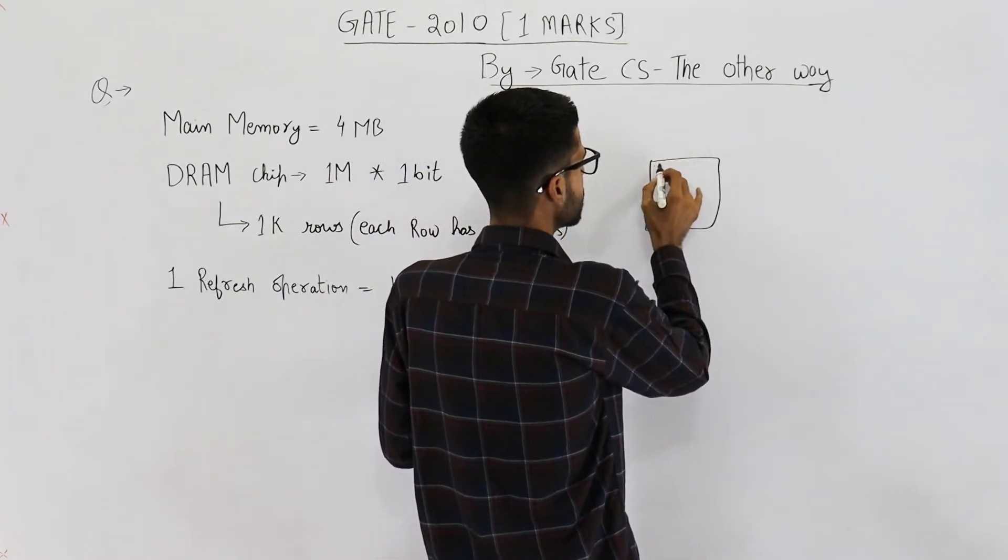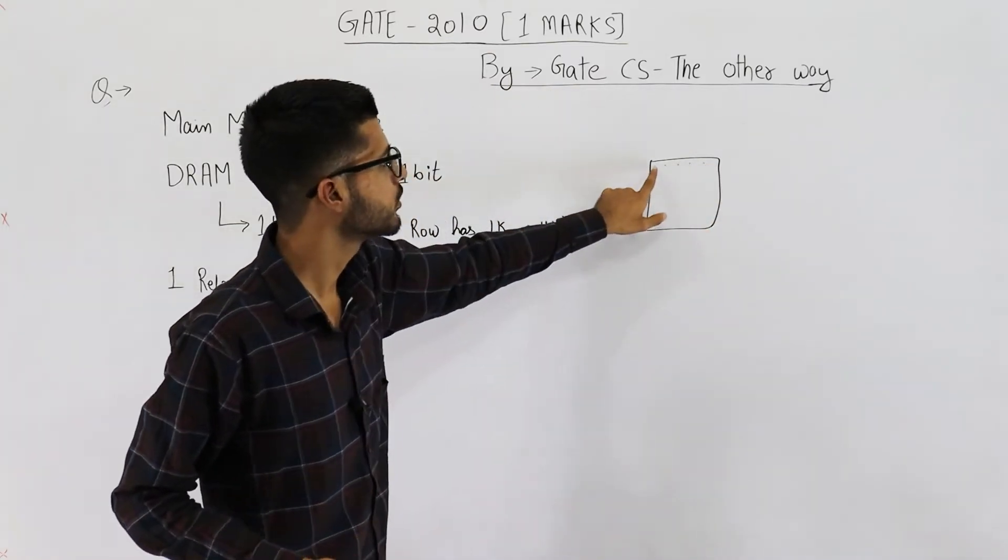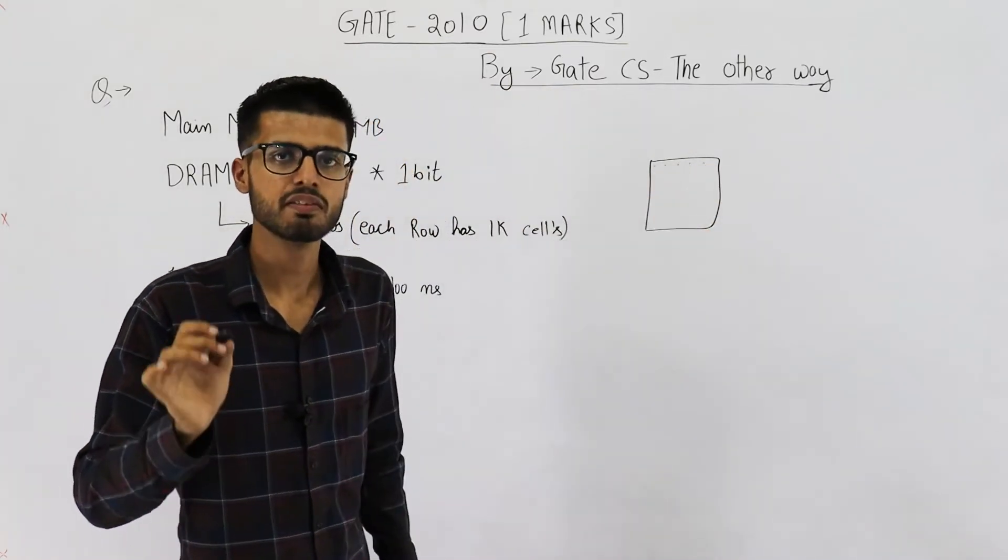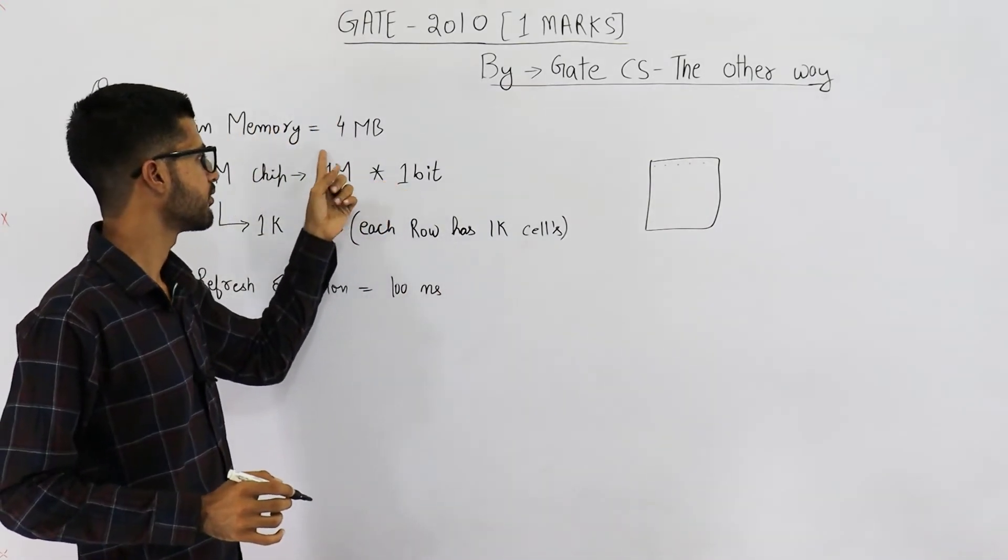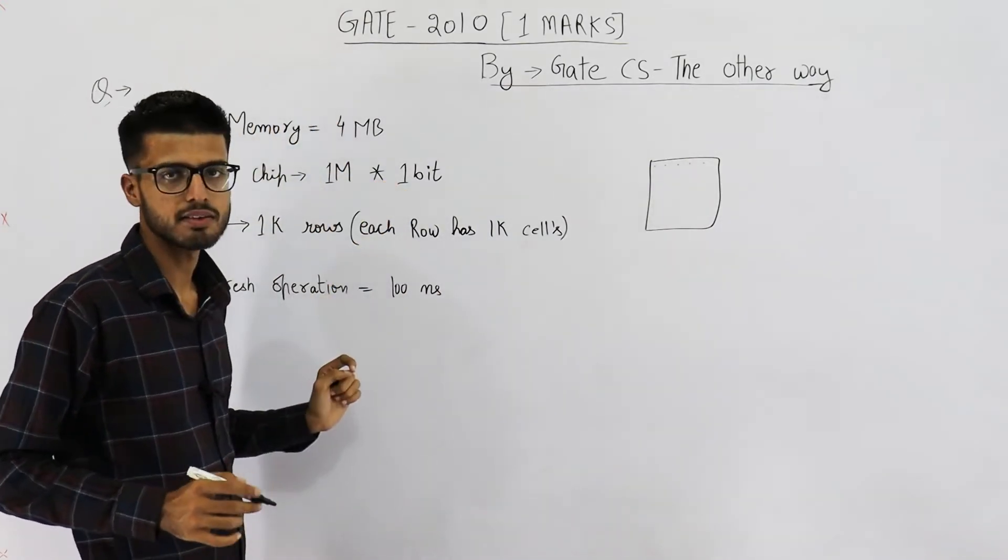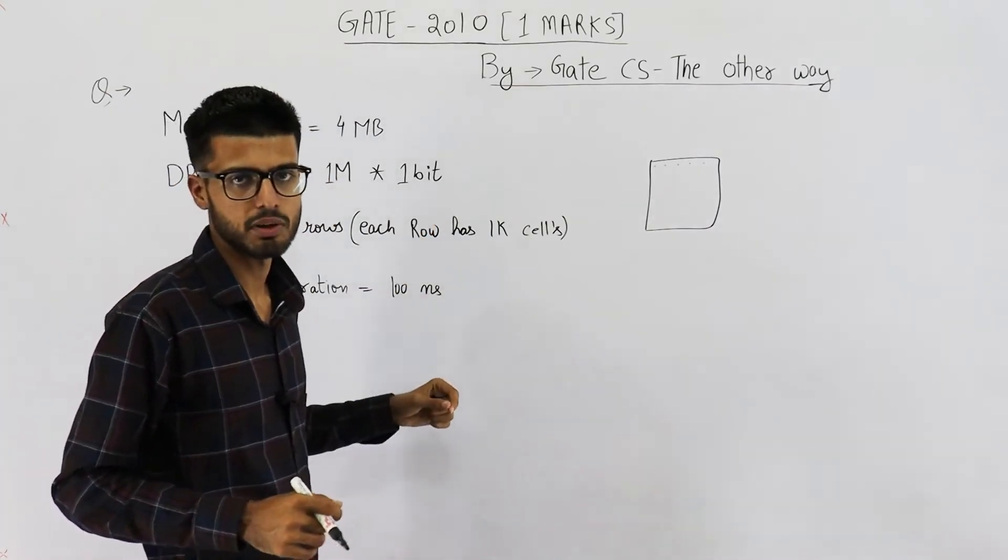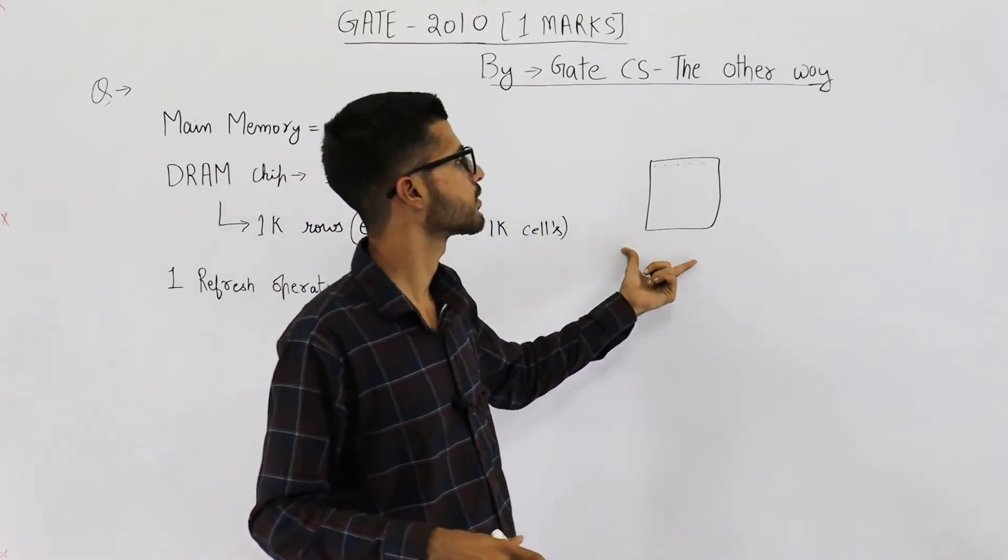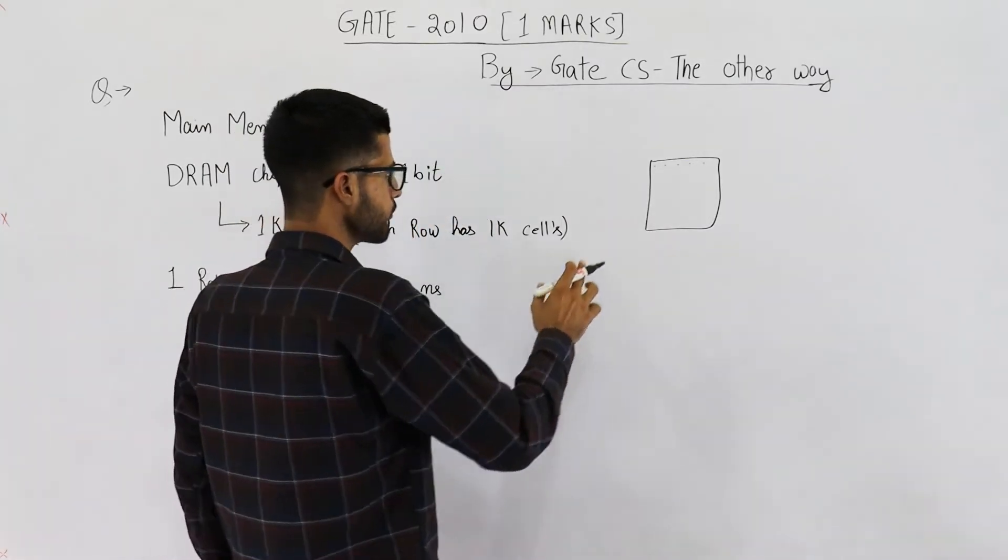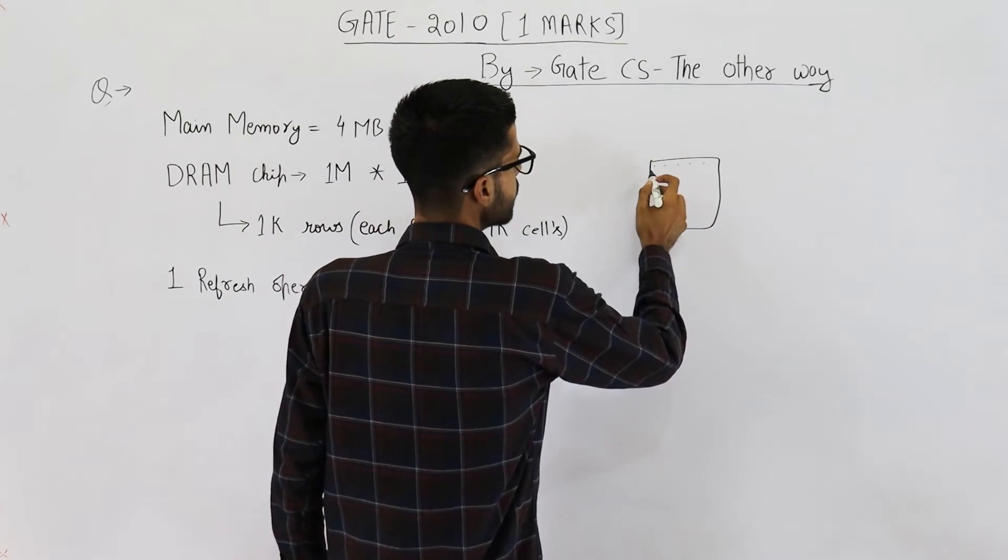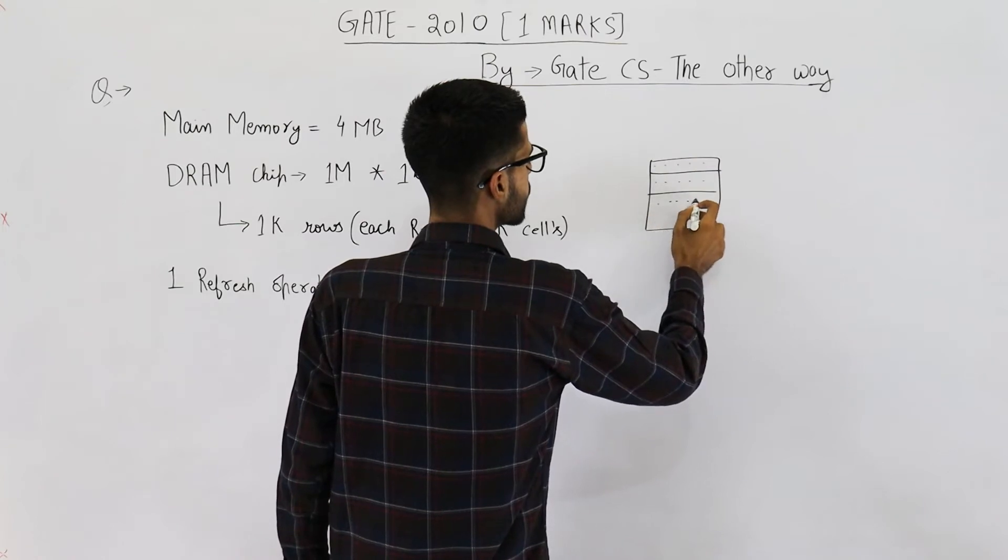See, in DRAM chip, there will be multiple locations where you can store data. Each of these locations will be having a unique address. So, in this DRAM chip, we have 1M unique addresses where we can store data. And size of each location is 1 bit. That means, every bit in this DRAM chip has a unique address. Now, these locations are grouped into something called rows.